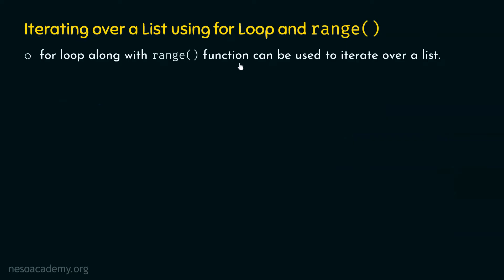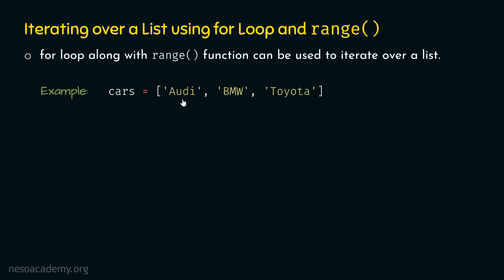For loop along with the range function can be used to iterate over a list. We have used for loop with the in keyword. Now this time we can use for loop with range function to iterate over a list. We will consider one simple example using the same cars list: Audi, BMW, and Toyota. The requirement is to print these items on the screen using for loop along with the range function, without using the in keyword.